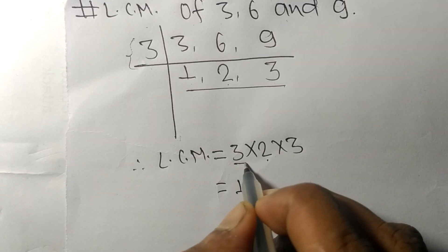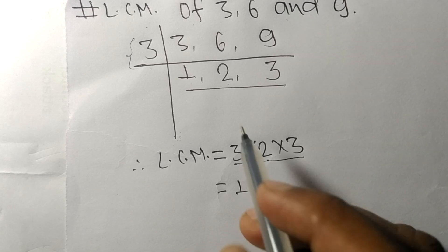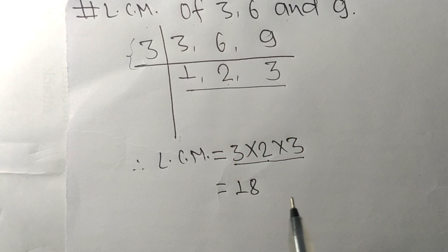So by multiplying all these numbers we got 18. So 18 is the LCM of 3, 6, and 9. So this much for today and thanks for watching.